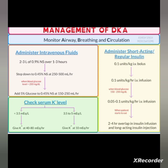Serum potassium levels must be monitored. If potassium is less than 3.5 mEq/L, give 40 to 80 mEq per hour. If potassium is normal (3.5 to 5 mEq/L), still give 10 mEq/L, because correcting acidosis may cause potassium to decrease again.